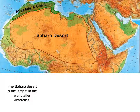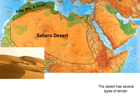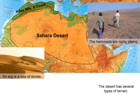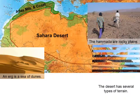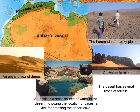The Sahara Desert is the largest desert in the world after Antarctica. Very few people live here. The desert is not all the same — it has several types of terrain. An erg is a sea of dunes, which people often picture when thinking of the Sahara. There is also a hamada, which is rocky plains, as well as old volcanic rock and an oasis. An oasis is a small source of water in the desert, and knowing the location of oases is vital for crossing the desert alive.